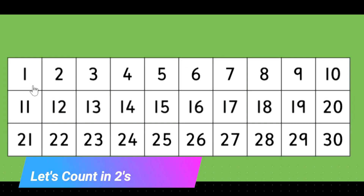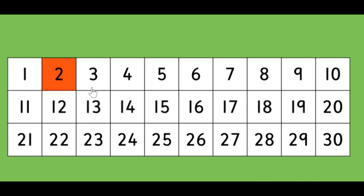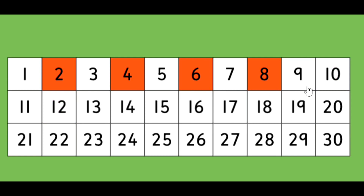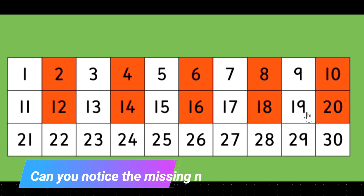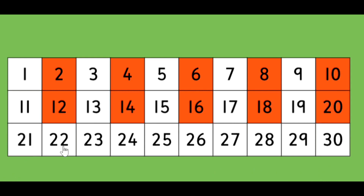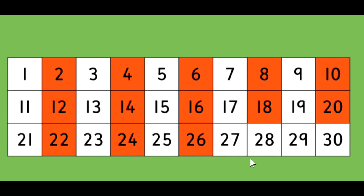Let's count in twos. Off we go: two, four, six, eight, ten, twelve, fourteen, sixteen, eighteen, twenty, twenty-two, twenty-four, twenty-six, twenty-eight, and thirty.